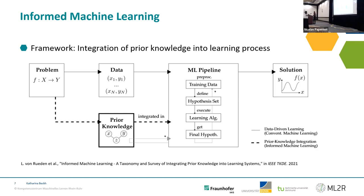The typical machine learning pipeline has four components: it starts with the training data, which can be pre-processed; then you define the hypothesis set, which is the parameter and model choice; you have the learning algorithm; and the final hypothesis where you benchmark, post-process, and test against. The solid line represents the typical data-driven learning that most of you will know, and the dotted line is where the prior knowledge comes in.